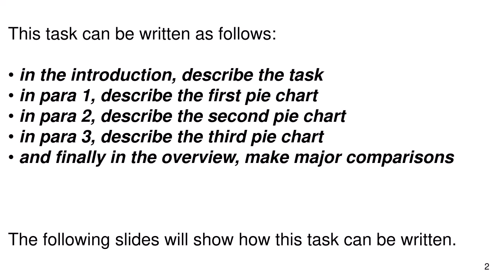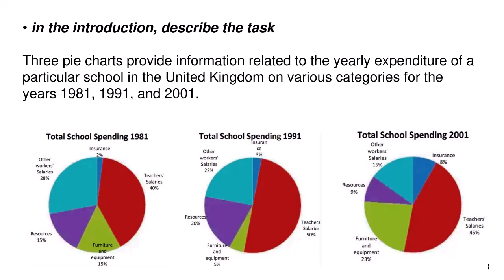The following slides will show how this task can be written. In the introduction, describe the task: Three pie charts provide information related to the yearly expenditure of a particular school in the United Kingdom on various categories for the years 1981, 1991 and 2001.